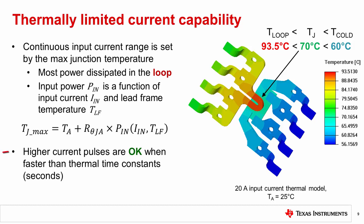It is also worth noting that the thermal time constants of the device when on a PCB are usually on the order of seconds, so shorter duration but higher amplitude pulses are tolerable as long as they are short enough in duration to prevent excessive heating of the lead frame.